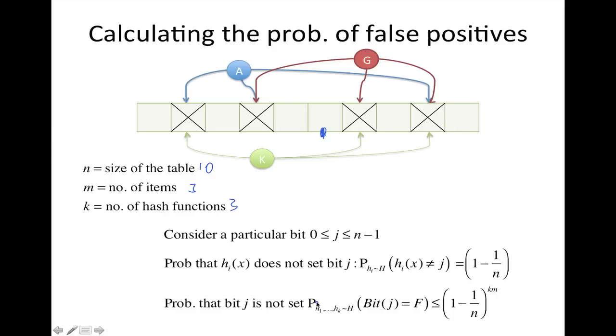So from that, we can say, what's the probability that the bit j is just not set by any one of the hash functions and any one of the m elements. So that we can bound by this probability up here, but raised to the power k for the number of hash function times m for the number of elements. Because this is kind of the number of tries that we had in order to set our particular bit j.